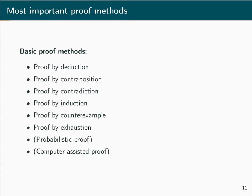Since proving statements is so critically important for the material of this course, part of this introduction is dedicated to the basic methods that exist for mathematical proofs. The most important proof types are: proof by deduction, proof by contraposition, proof by contradiction, proof by induction, proof by counterexample, and proof by exhaustion. There are a few more types used in special cases — such as probabilistic proofs and computer-assisted proofs — however we won't be dealing with them in this course.